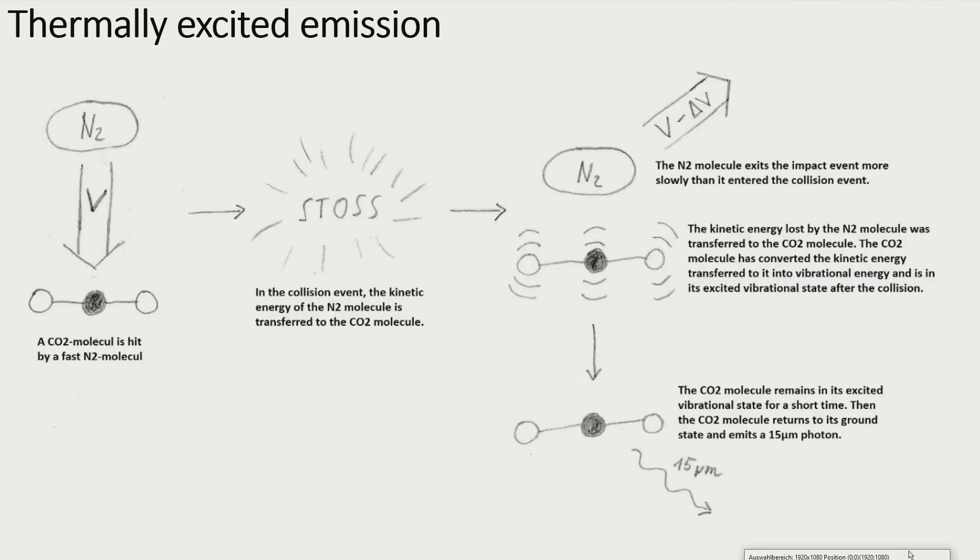In a collision with another gas molecule, a CO2 molecule, in the ground state, can absorb sufficient energy from the kinetic energy of its collision partner, that it goes into an excited state. It can then emit a photon, and return to its ground state.